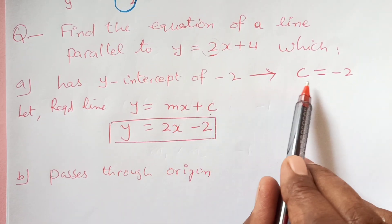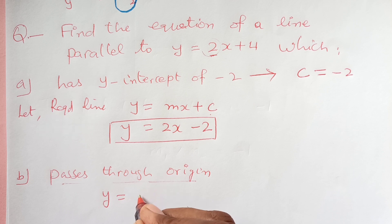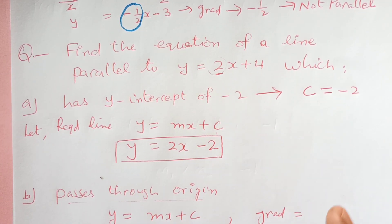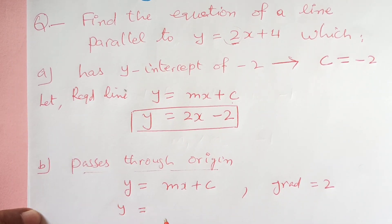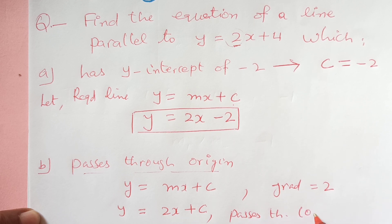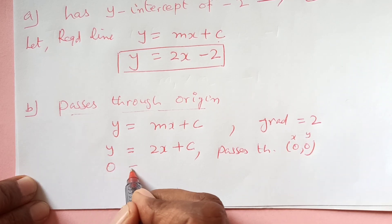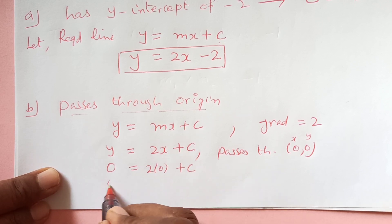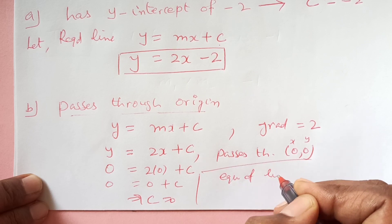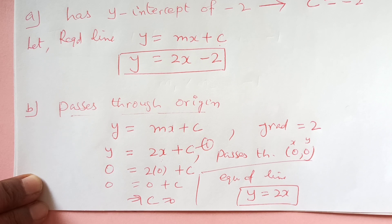Another one passes through the origin. We are not given the y-intercept, but we are given that it passes through the origin. I will suppose the line is y equals Mx plus C, and the gradient is 2 from the given line. So y equals 2x plus C. This line is passing through (0, 0), so substituting x equals 0 and y equals 0 gives 0 equals 0 plus C, meaning C is 0. So the equation of the line is y equals 2x.